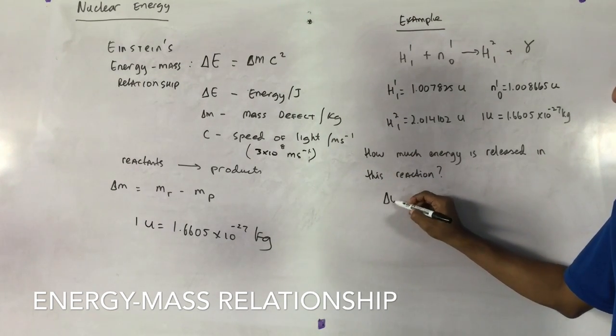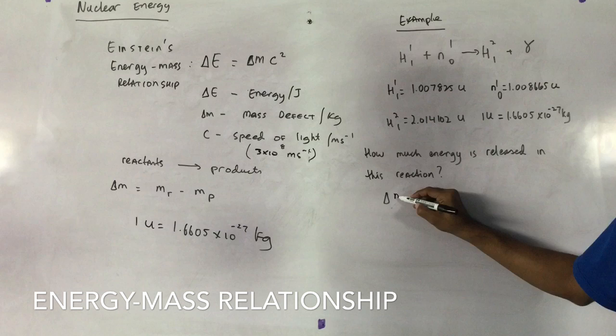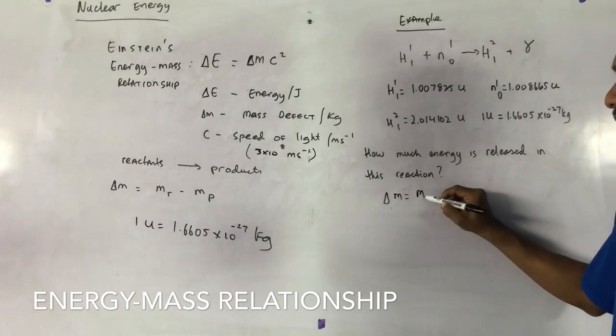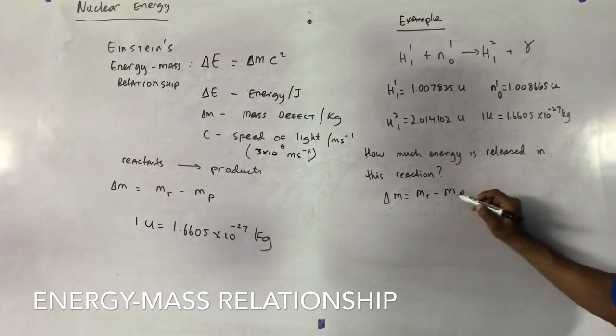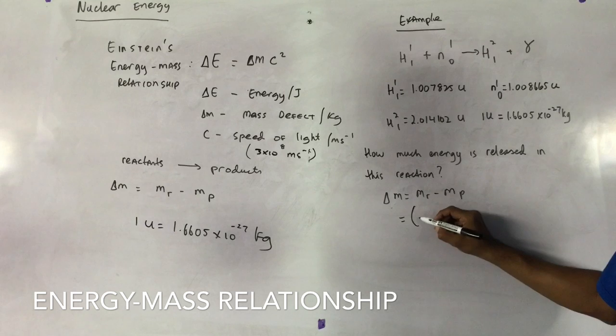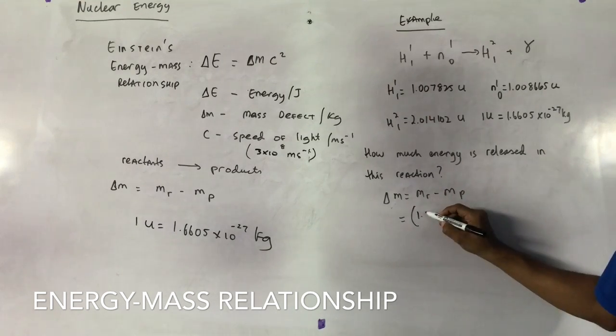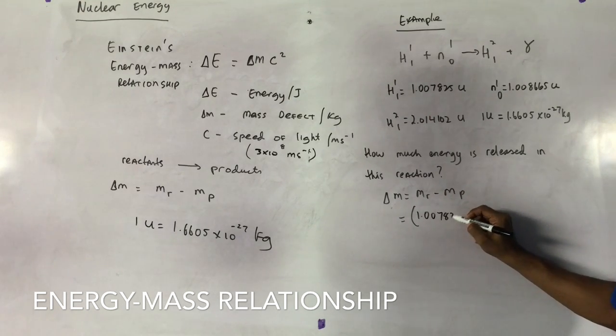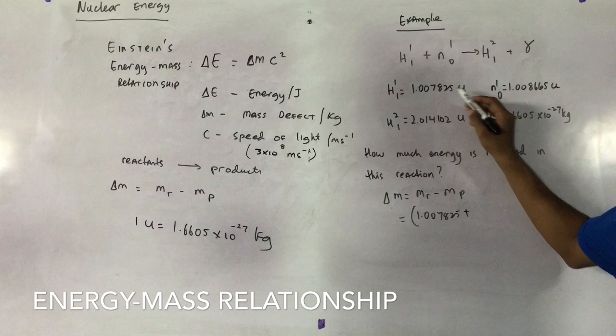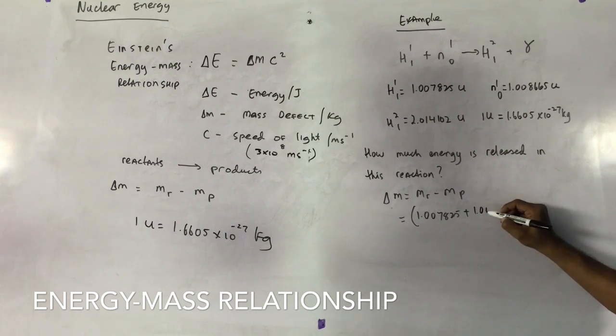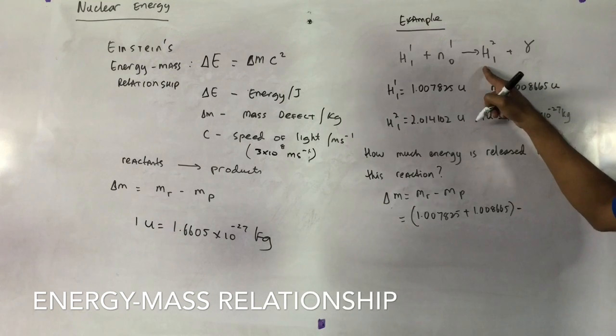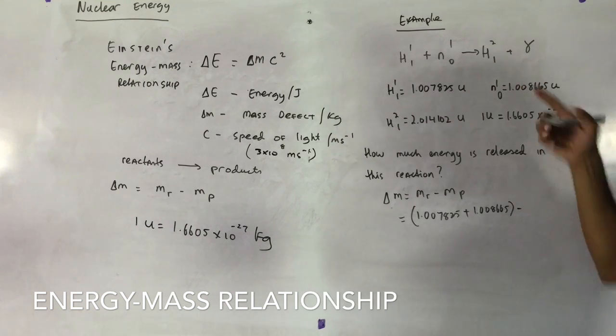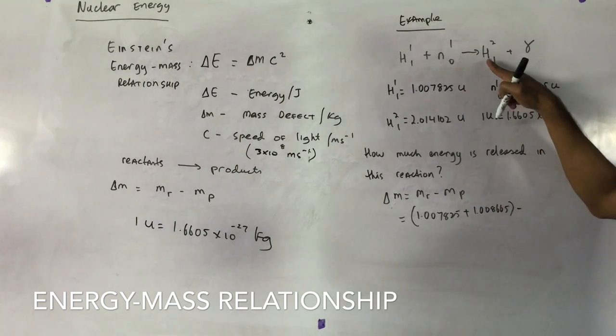So the first thing we need to do is to find mass defect. To find mass defect, mass defect is the mass of the reactants minus mass of the products. So the reactants are what? A hydrogen atom, 1.007825 plus a neutron, 1.008665 minus the mass of the product, which is only, this is gamma right? Gamma that has no mass. It's a ray.